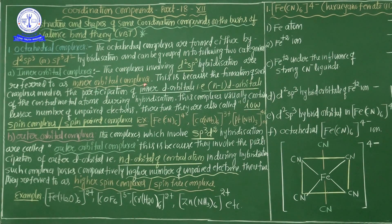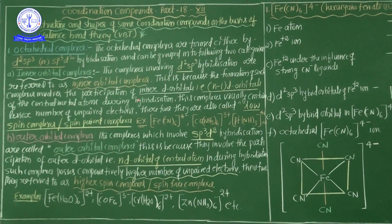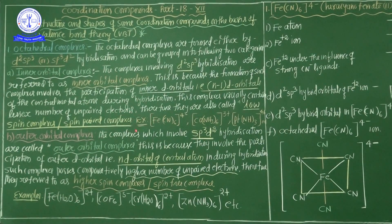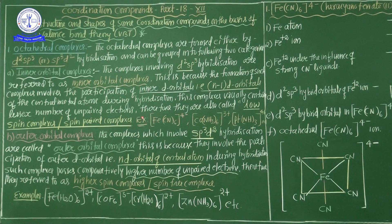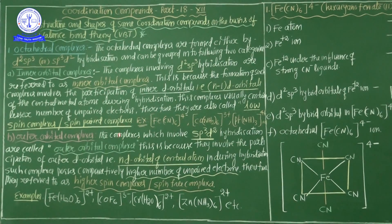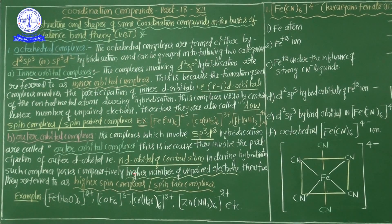According to VBT theory, the central metal atom must provide vacant orbitals and ligands donate lone pairs of electrons. If the central atom does not have sufficient vacant orbitals, it must be involved in hybridization. The ligands then approach the central metal atom to form coordination covalent bonds.